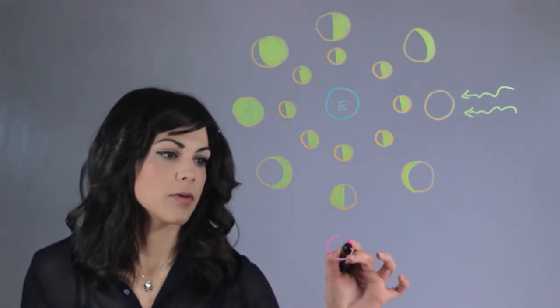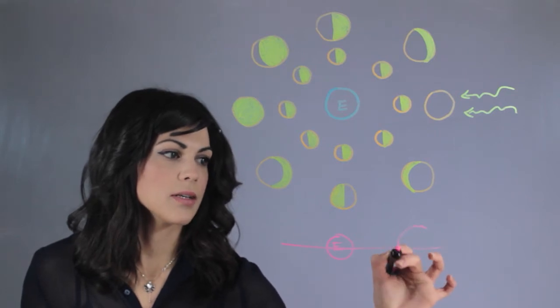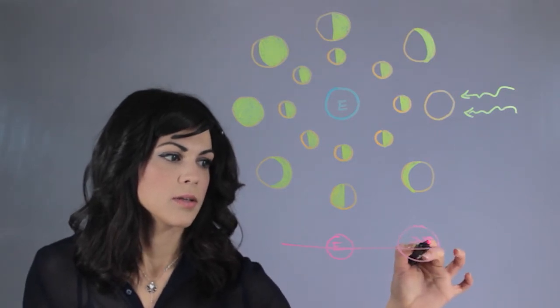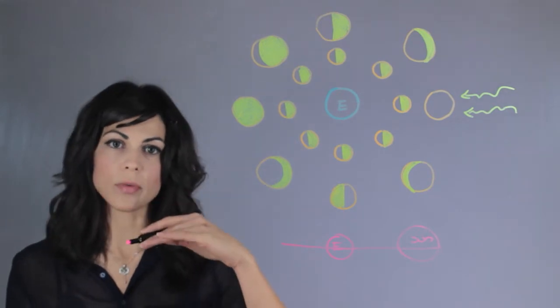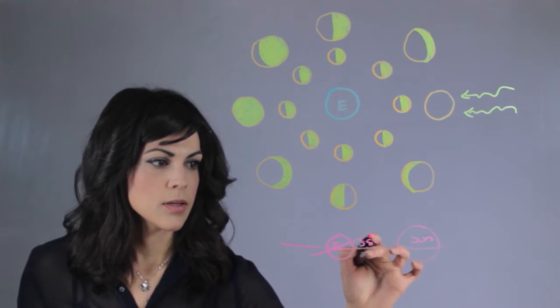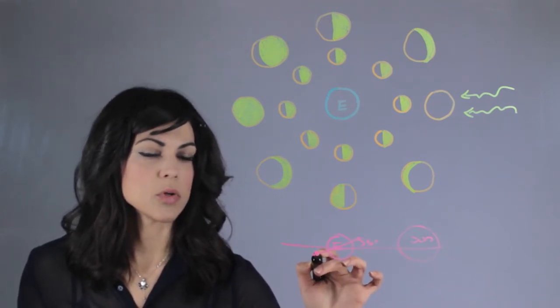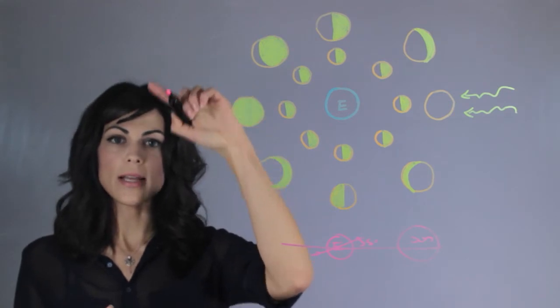So if we were to think of here is the Earth and here is the plane where the Sun is, the moon is not rotating in this plane. The moon has actually a five-degree tilt and this causes the moon to have this ascending motion and descending motion.